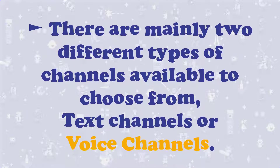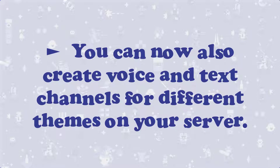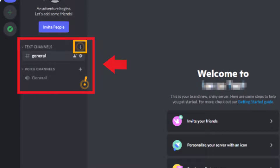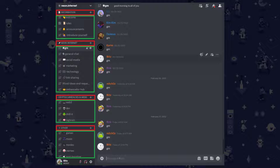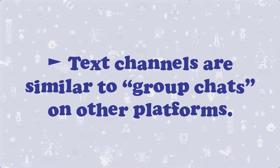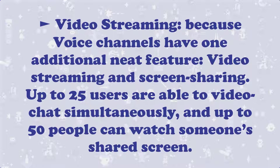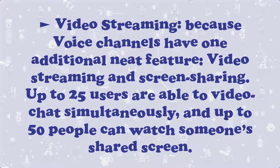There are mainly two different types of channels available to choose from: Text Channels or Voice Channels. Step 8. In addition to the channels under General, you can now also create voice and text channels for different themes on your server. To do this, click on the plus symbol next to the Text Channels and Voice Channels. You are free to either put all your channels into one big category or split them into different categories. Text Channels are similar to group chats on other platforms, while Voice Channels are similar to online meeting rooms such as Zoom or Microsoft Teams. Voice Channels also have video streaming and screen sharing. Up to 25 users are able to video chat simultaneously, and up to 50 people can watch someone's shared screen.